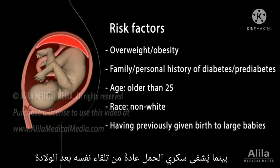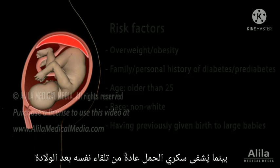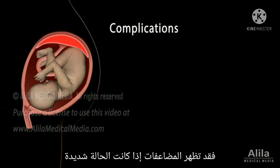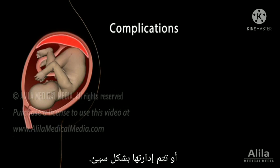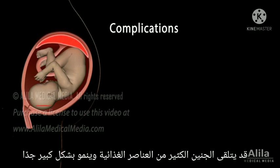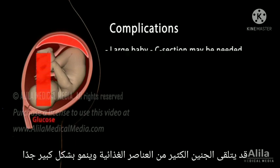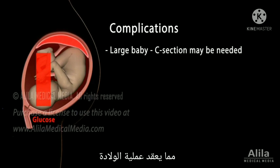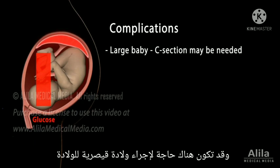While gestational diabetes usually resolves on its own after delivery, complications may arise if the condition is severe and or poorly managed. Because of the constant high glucose levels in the mother's blood, the fetus may receive too many nutrients and grow too large, complicating the birth process, and a C-section may be needed for delivery.